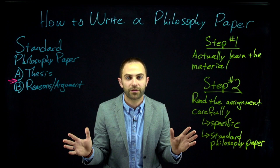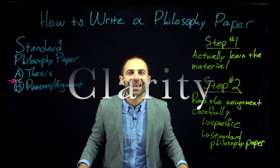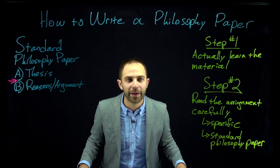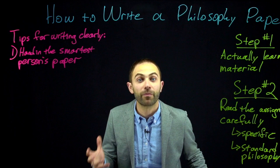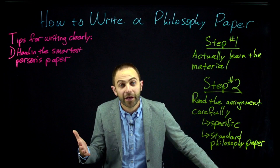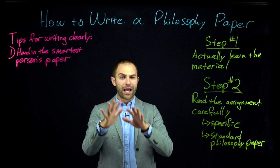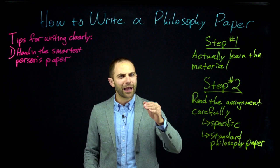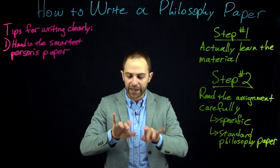Now you've read the assignment carefully. Step three: write the paper clearly. Clarity is what you want — every word, every paragraph, every page should be crystal clear. Here are tips for writing a clear paper. Tip number one: hand in the smartest person's paper. As a college philosophy professor, you get a ton of papers where the beginning is rambling and lost, but the end is pretty clear and well written. When you're writing yourself, you can sense this too — at the beginning it's hard to get going, but by the time you're writing the end, the words come easily.